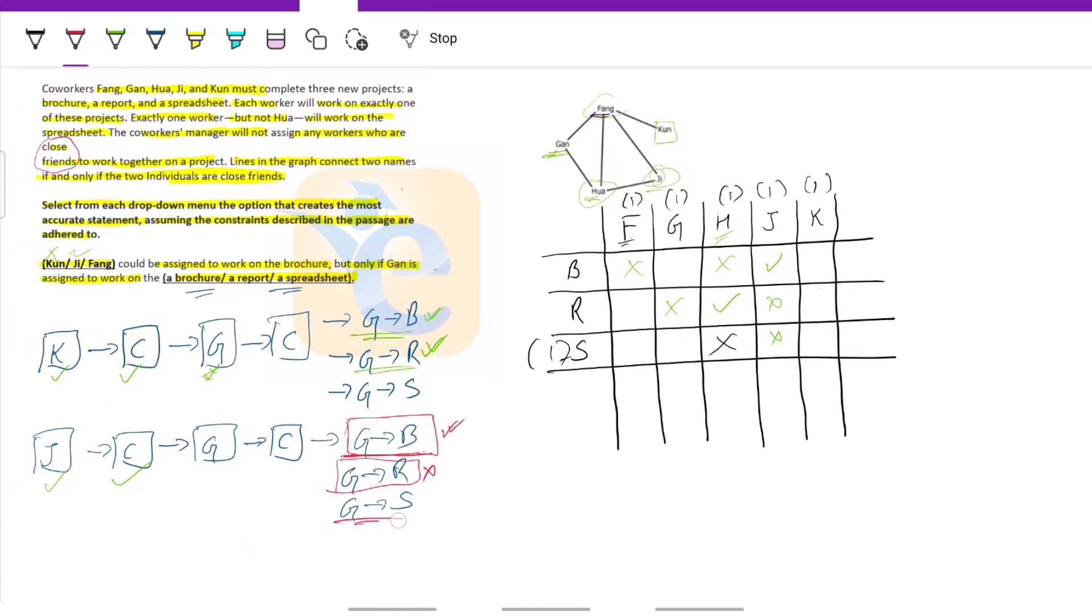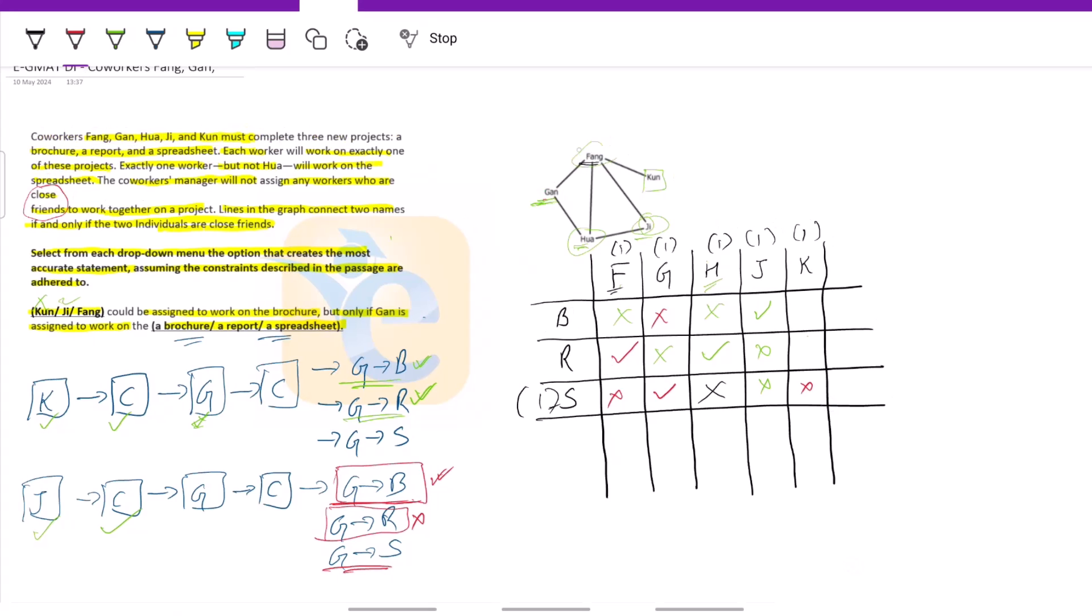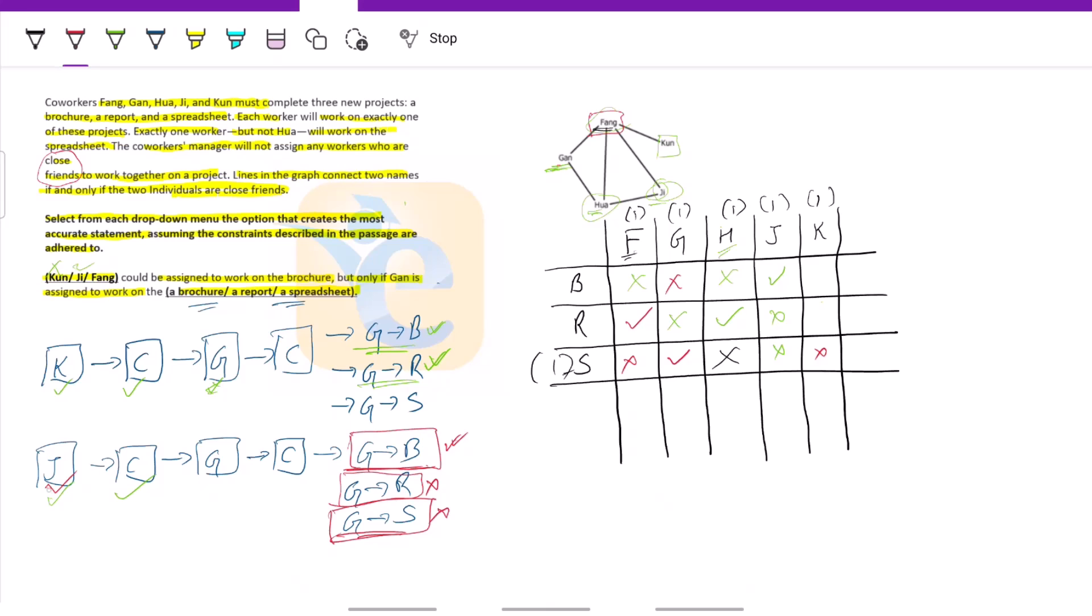Now, can we put G on spreadsheet? If we put G on spreadsheet here, this means G cannot be here. This means G cannot be here. Nothing else can be here. Here, there has to be a tick. F has to work on report. But if F is working on report, he's friends with everyone. He cannot work with anyone. So this condition also gets violated. So in this case, as we see, if we put G on the brochure, only one of the three conditions is being met. And thus, this is our answer.